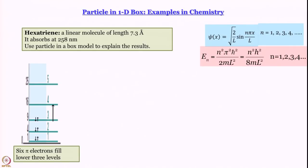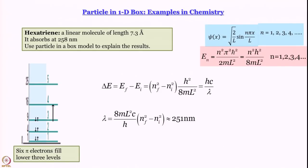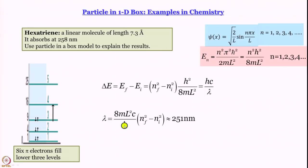What remains is to work out the energy difference: delta E equals (nf² minus ni²) multiplied by h²/8mL², which equals hc/lambda. We want the wavelength, so lambda equals 8mL²c/h multiplied by (nf² minus ni²). Here L=7.3 angstrom, m is the electron mass, c and h are known. With ni=3 and nf=4, the value of lambda we get is 251 nanometers.